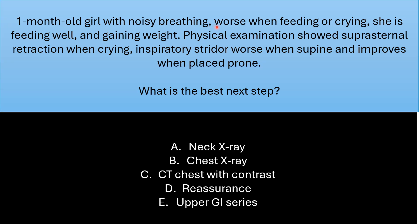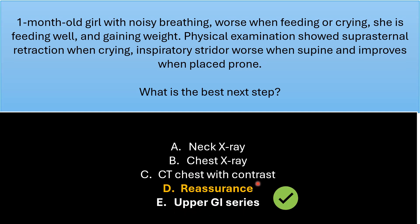The noisy breathing or stridor is worse when feeding or crying. She is feeding well and gaining weight. Physical examination shows supra-sternal retraction when crying, inspiratory stridor worse when supine, and improves when placed in the prone position. What is the best next step: neck X-ray, chest X-ray, CT chest with contrast, reassurance, or upper GI series?